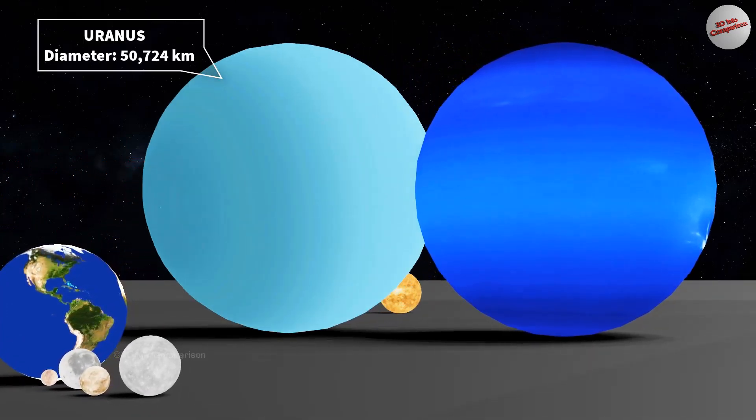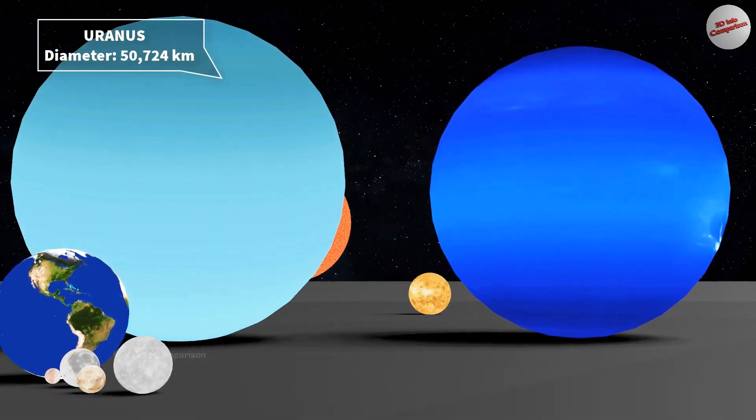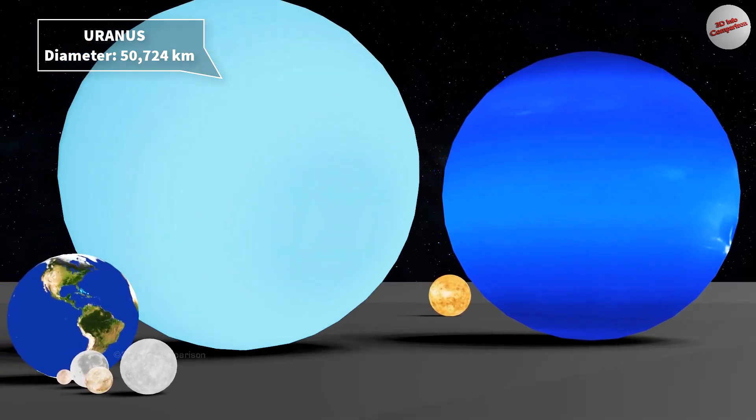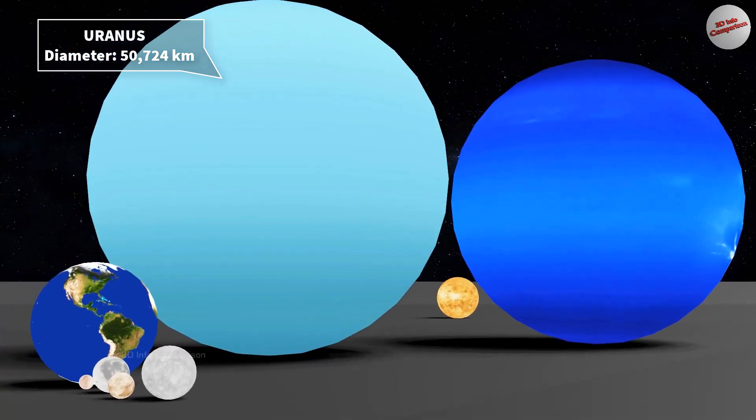Uranus is the seventh planet from the Sun in our solar system. It is an ice giant and has a diameter of approximately 51,118 kilometers.